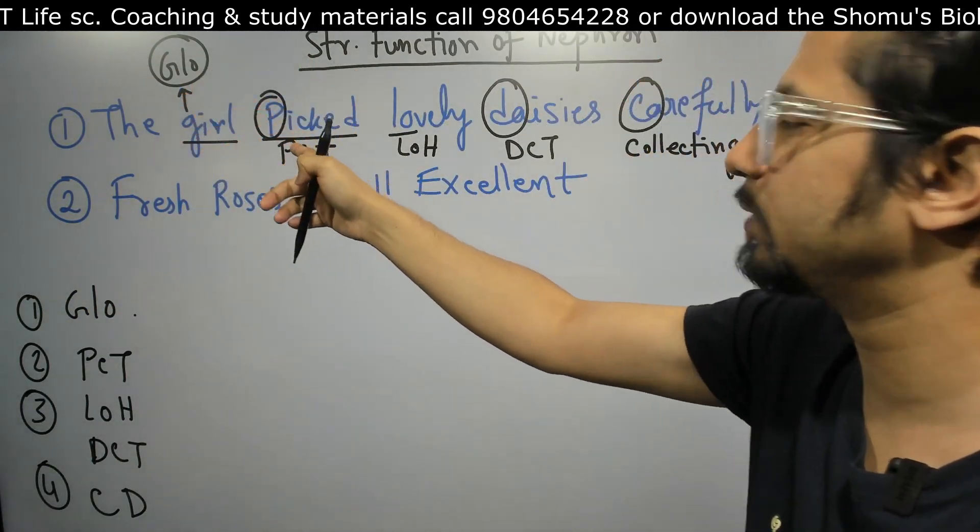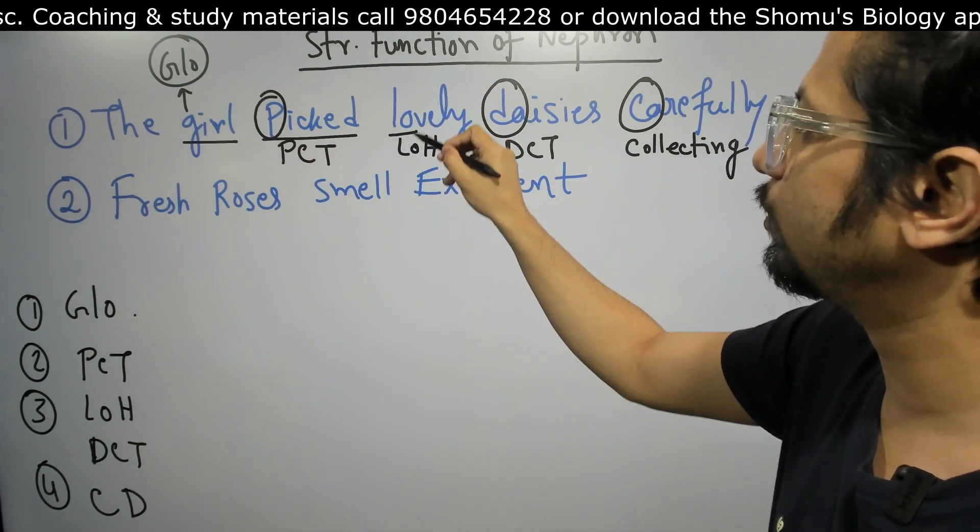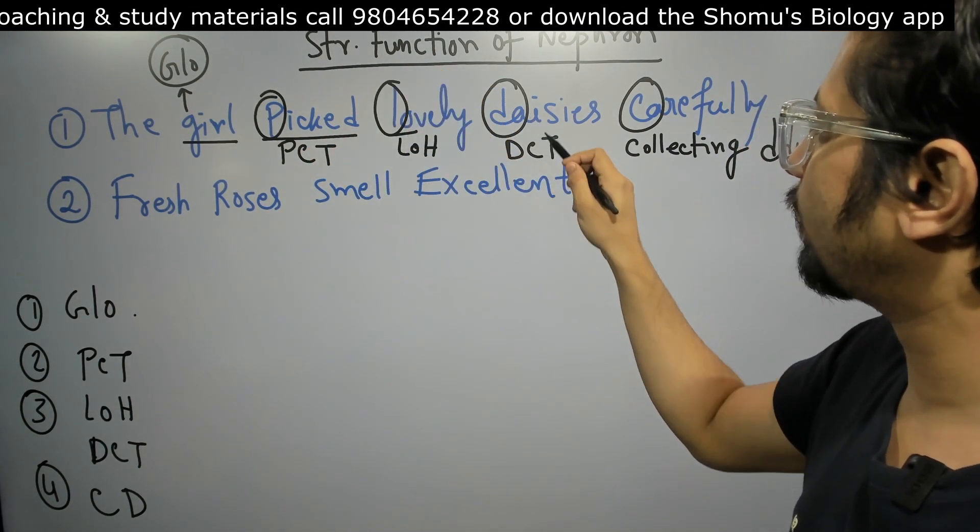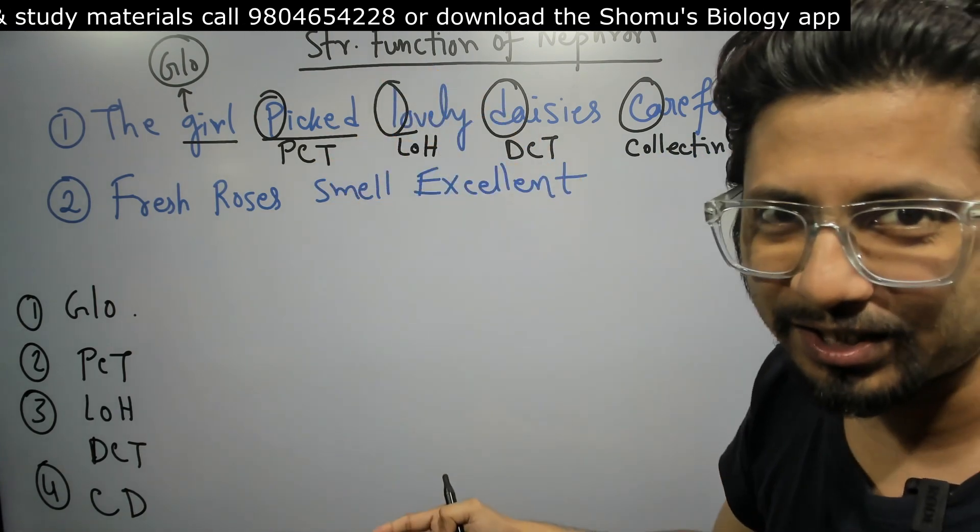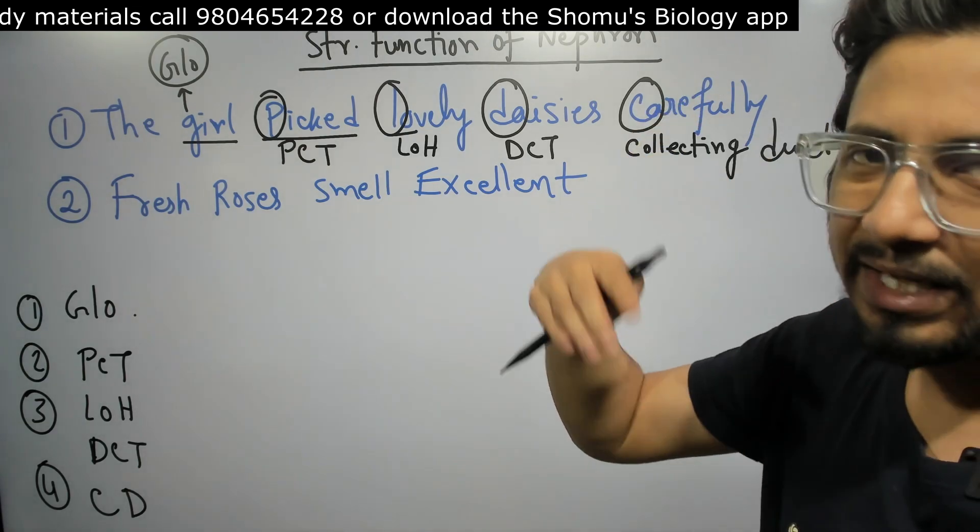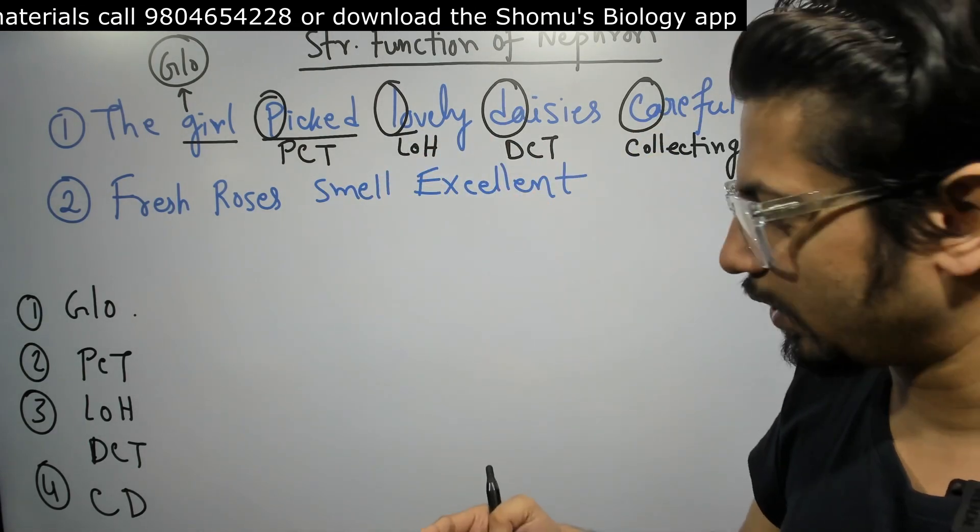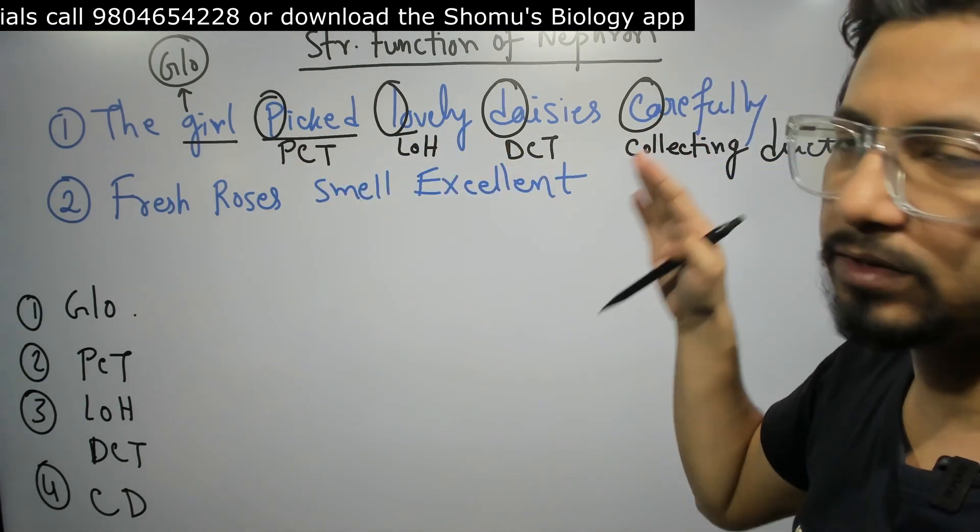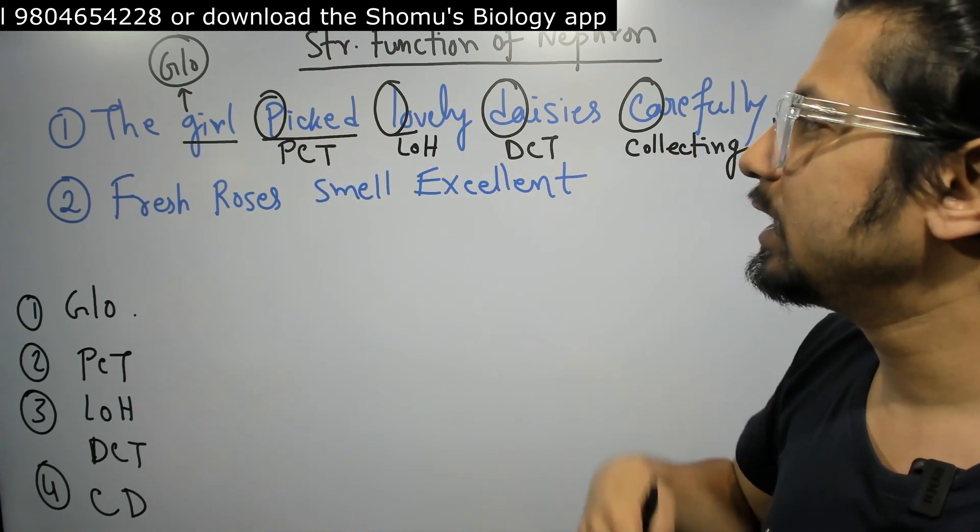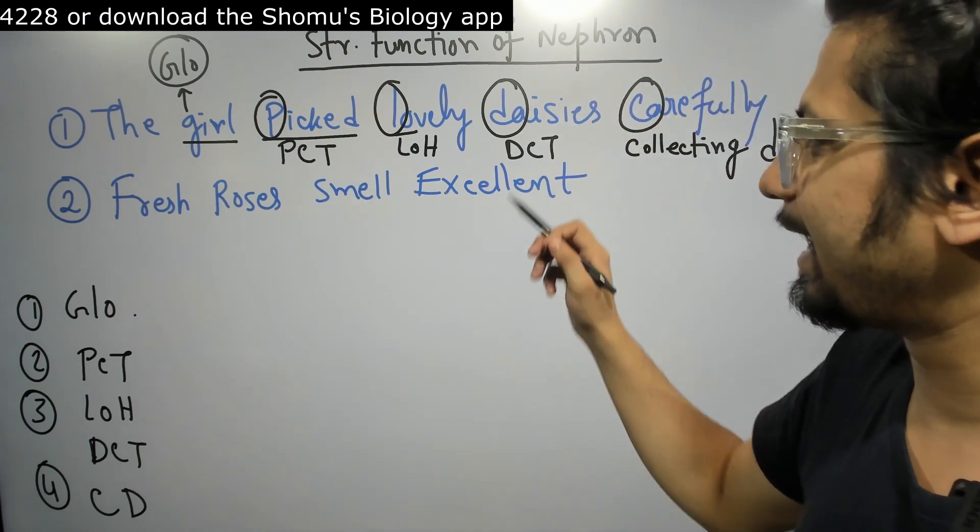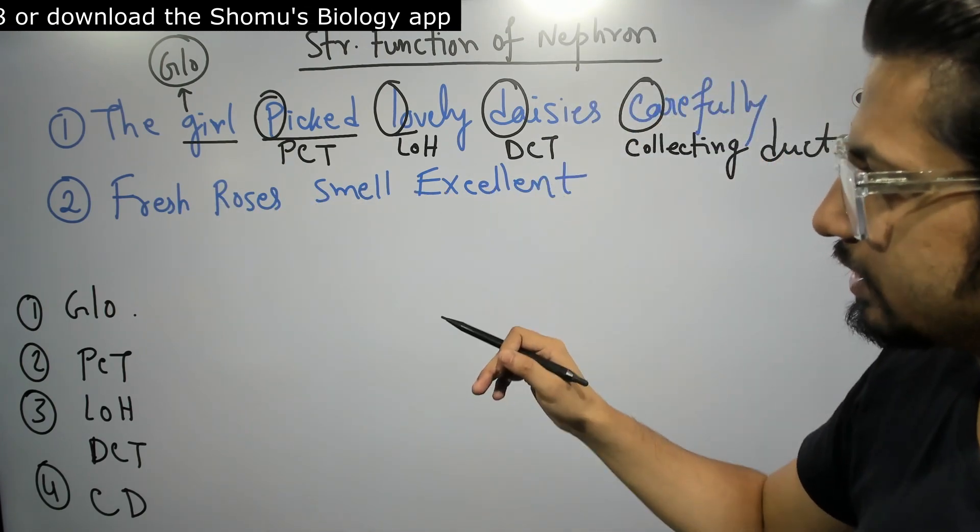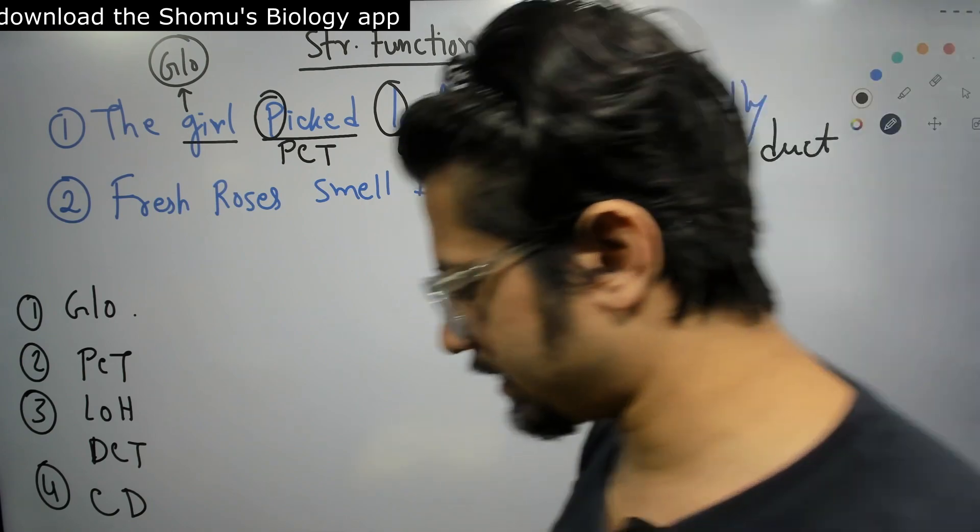Glomerulus, proximal convoluted tubule, loop of Henle, distal convoluted tubule, collecting duct. This is the sequence of structures of nephron. Once you know the sequence of structure from the first sentence, apply the second sentence to understand their role. Fresh roses smell excellent.